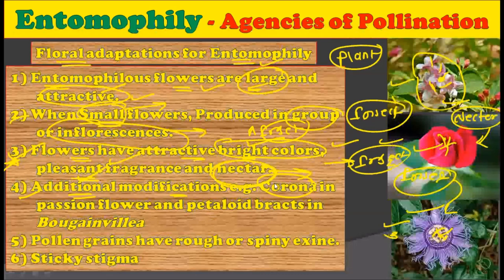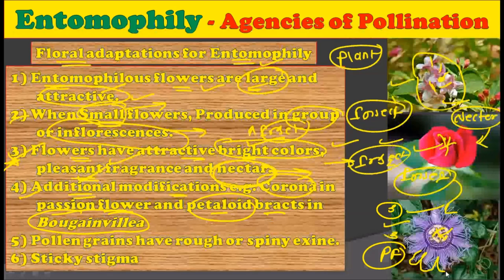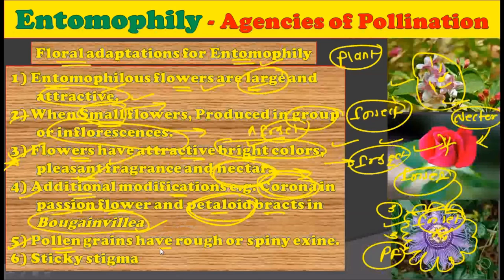There are some additional modifications, such as corona in the passion flower and petaloid bracts in the bougainvillea. As you can observe in this diagram, the corolla of the passion flower is beautiful and attractive for insects — this is a special adaptation to attract insects. In bougainvillea, the petaloid bracts are very beautiful and again very attractive for insects.